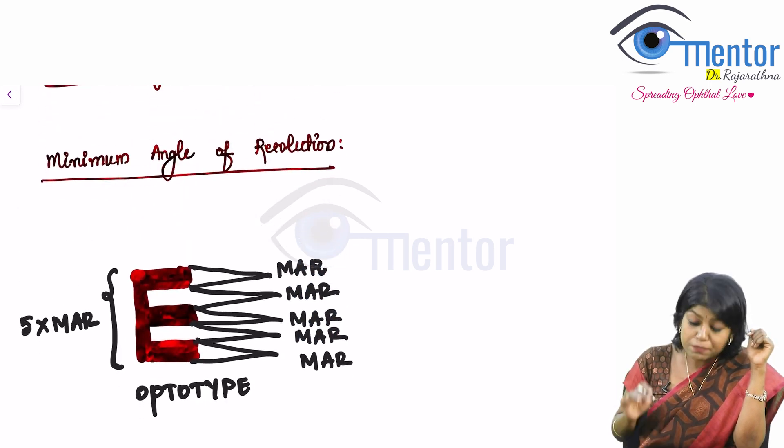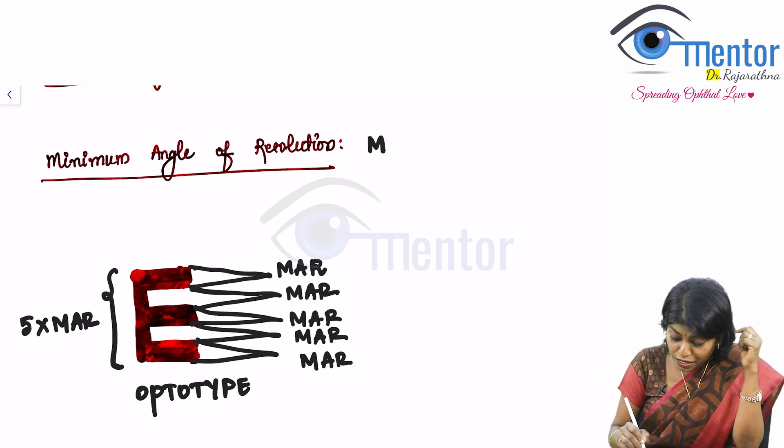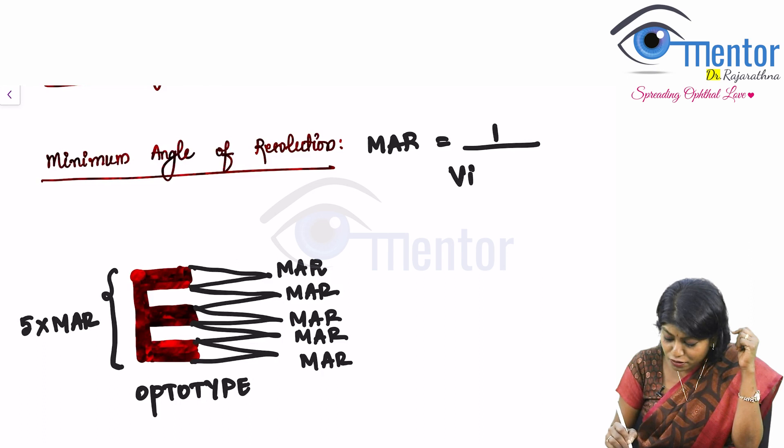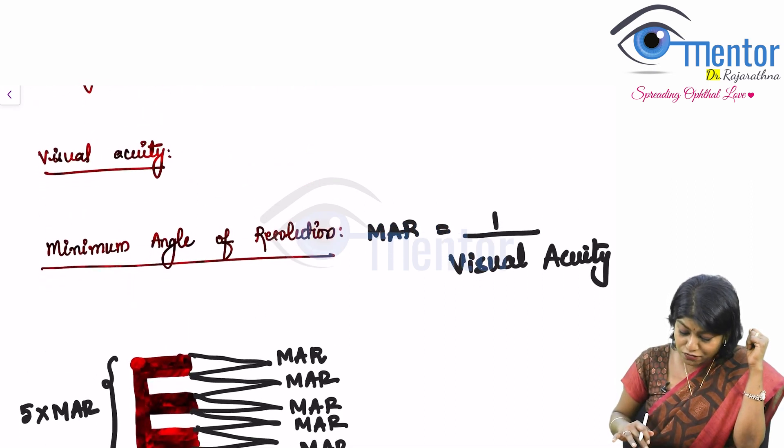Now what is minimum angle of resolution? You know what it is. But in terms of formula. Minimum angle of resolution is inverse of visual acuity. It is inverse of visual acuity.